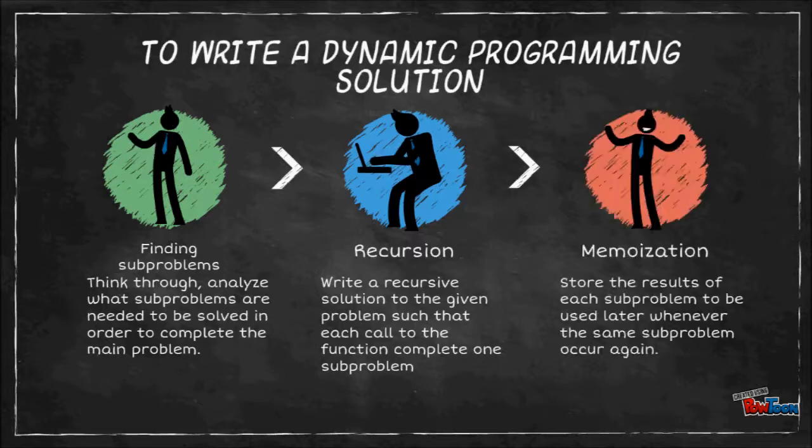The next step is to write a recursive solution such that each call to the function completes one sub-problem. And next, we have the trickier part, memoization. Memoization is to store the results of each sub-problem to be used later whenever the same sub-problem occurs again.